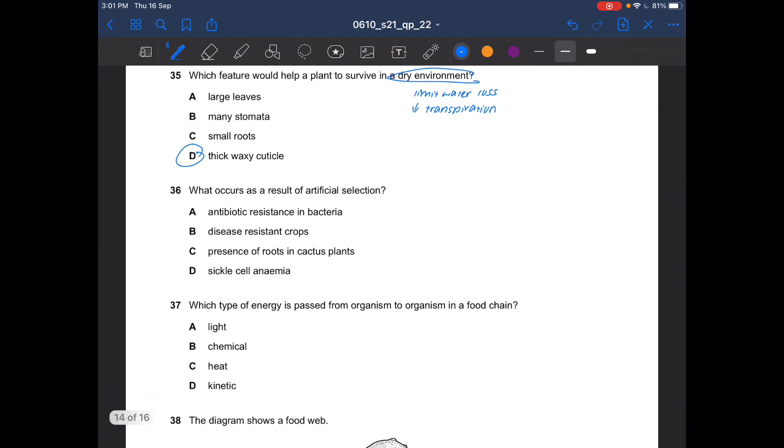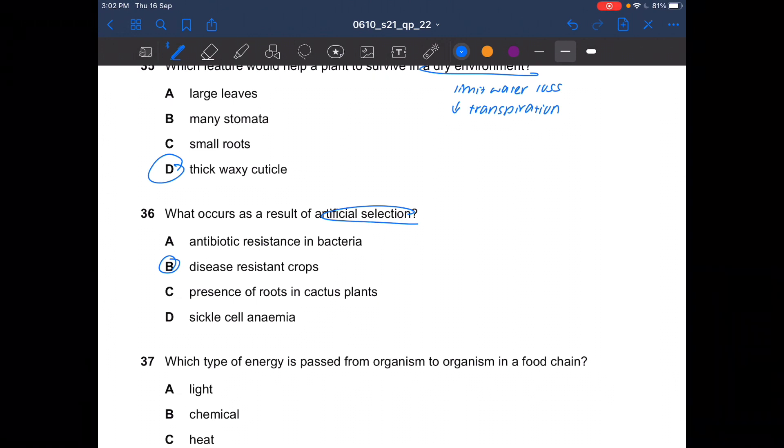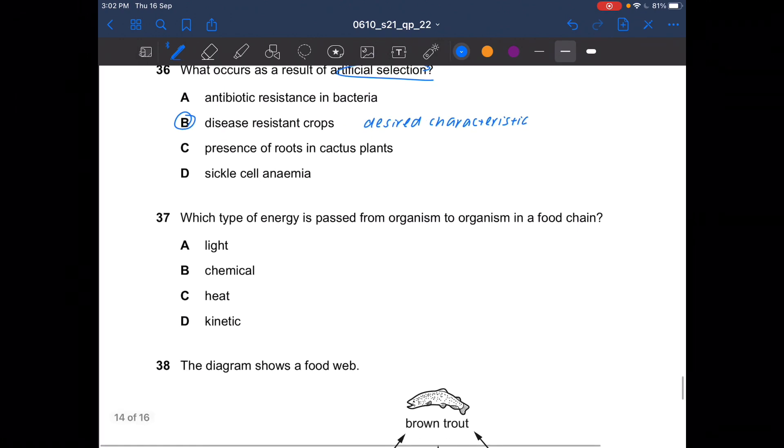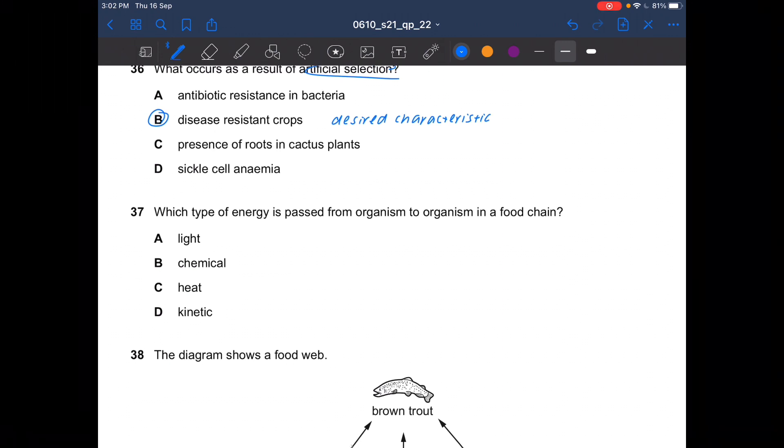Next question. What is a result of artificial selection? That would be disease-resistant crops. This is a desired characteristic. Next question. What type of energy is passed from organism to organism in a food chain? Organism to organism should be chemical. So the answer is B.